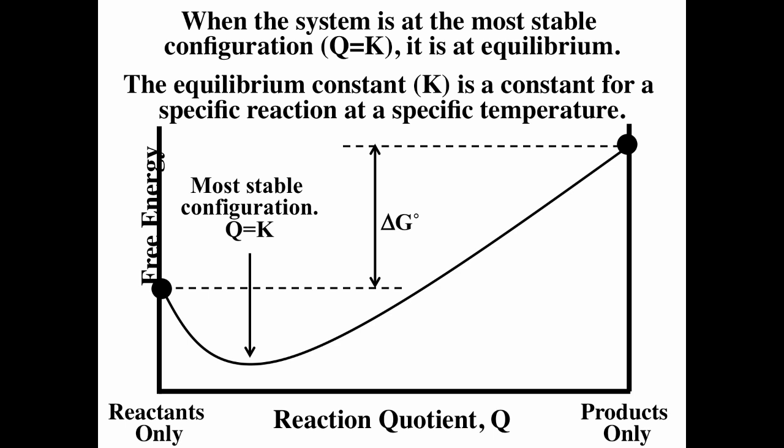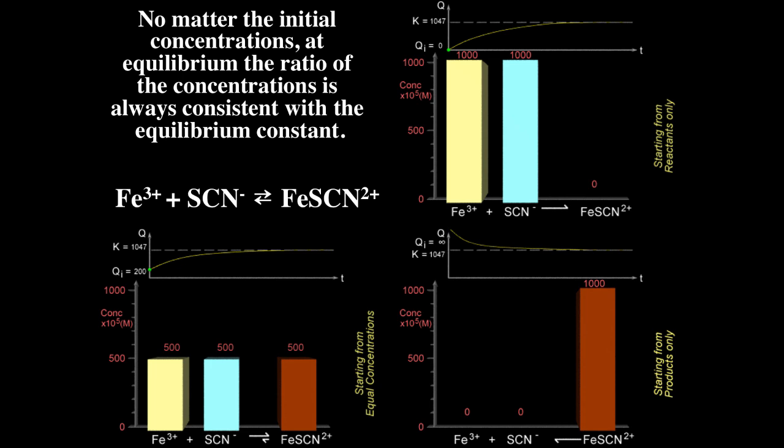K is a constant for a specific reaction at a specific temperature. Q changes as the reaction proceeds. Looking at an example — iron ions plus thiocyanate going to iron thiocyanate — no matter where we start, we end up at the same place. When we start with only reactants, Q starts at zero and eventually Q reaches K.